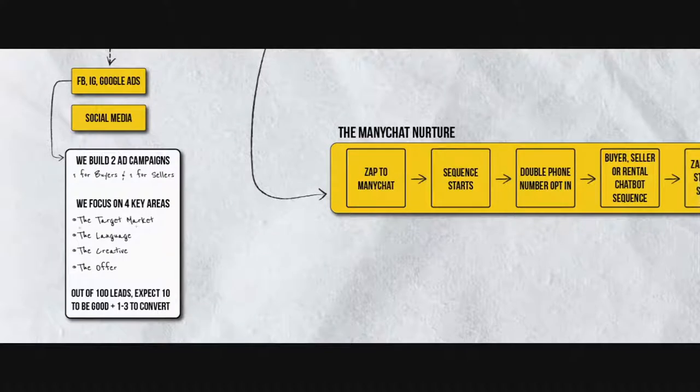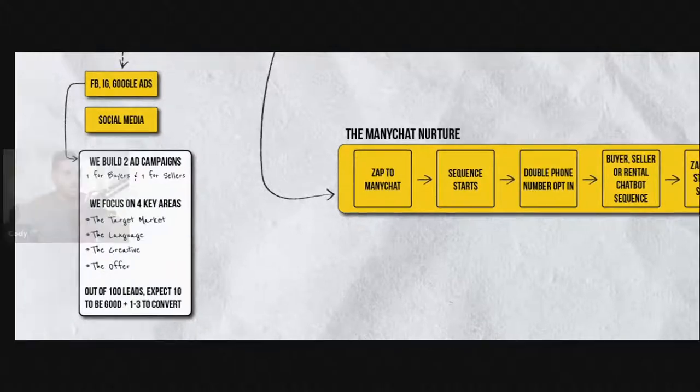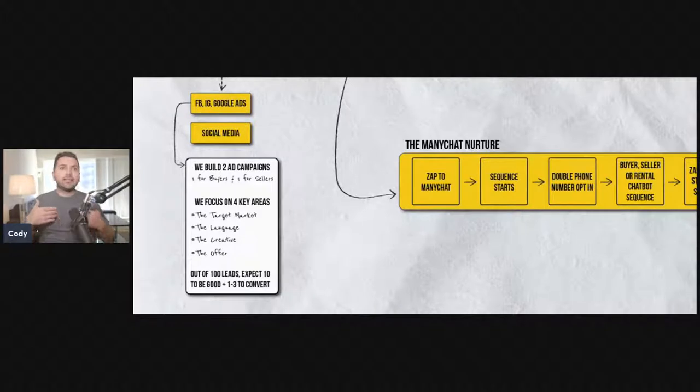There's four key focuses and four key areas that we focus on when we build out ads for our clients. The first is the target market. The second is the language. The third is the creative. The fourth is the offer. For example, we want to target Spanish speaking people that are looking for waterfront property. We focus on these four key areas: the target market, the language, the creative, the offer.